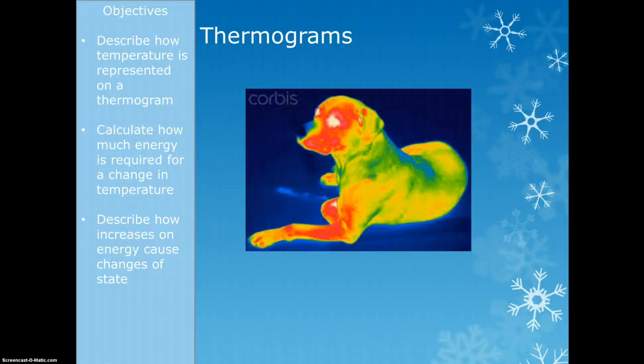So there we go, picture of a dog. You can see there's a lot of heat around its face and its arms and its front legs, but most of its body is a lot cooler, so it's not losing heat from its main body.